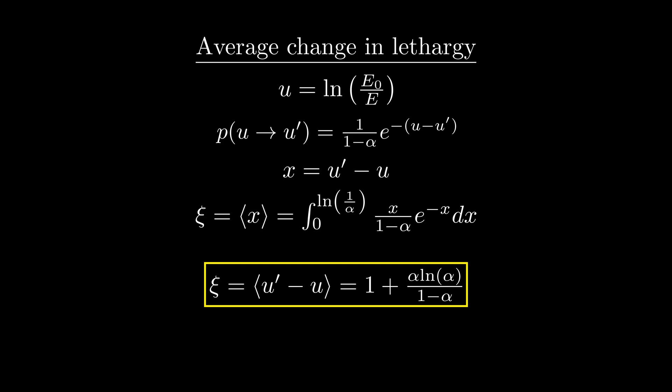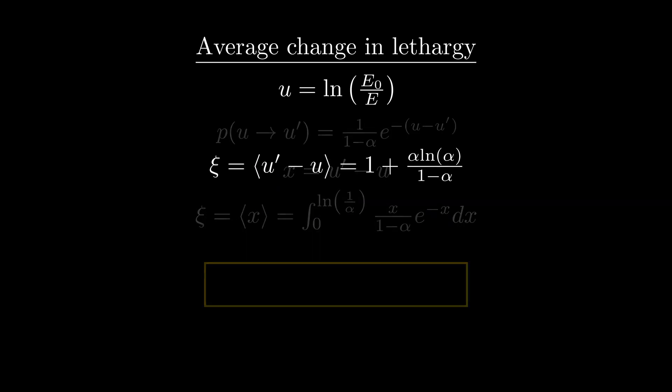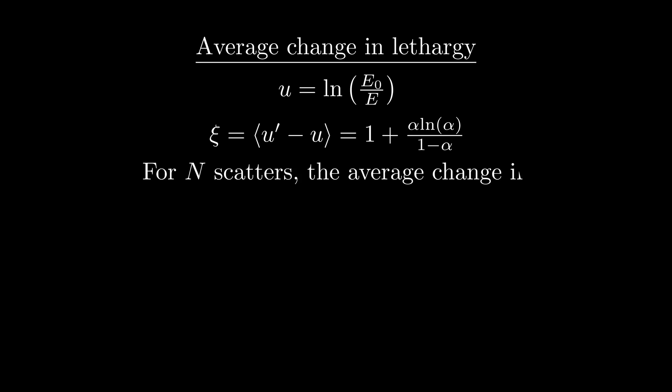In a very real sense, the value of psi for some material sort of describes how effective that material is at slowing down neutrons. The closer psi is to 1, the better the material is at quickly pulling energy out of neutrons through scattering. Because there's no dependence on the initial lethargy, we can calculate the mean change in lethargy for n collisions by simply multiplying psi by n. Now this calculation would be much more involved if we tried to calculate the mean change in energy after n collisions without the help of lethargy.